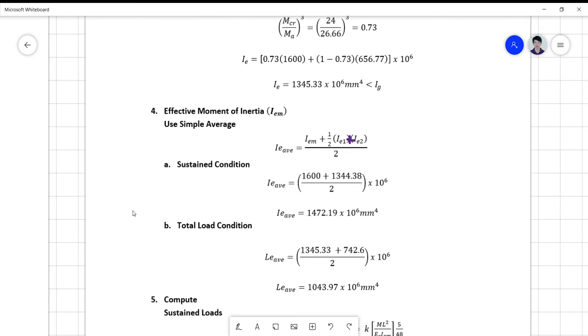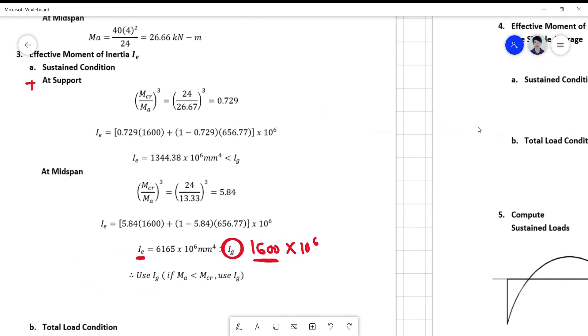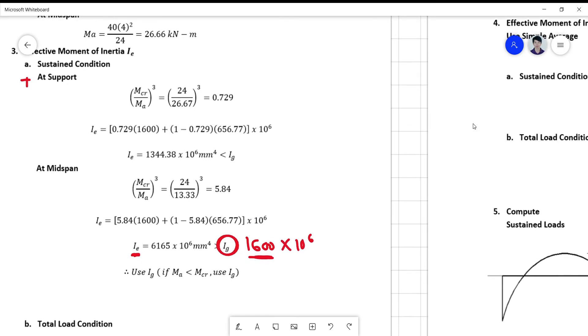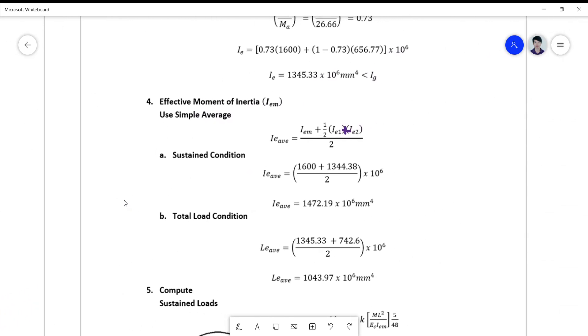So what is IE at the midspan for the sustained condition? Let's check. IE at the midspan is 1600 and 1344.38. So this becomes 16 plus 1344.38. It's 1344.38 plus 1344.38 divided by 2, so it's just a simple 1344.38. You add it to 16 divided by 2. You get this one.